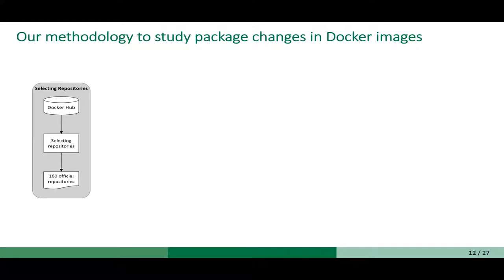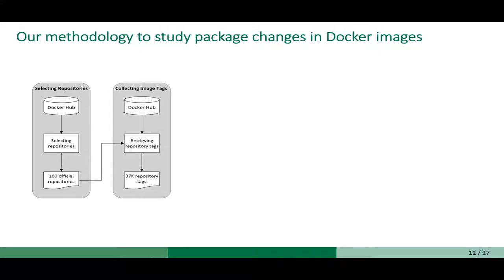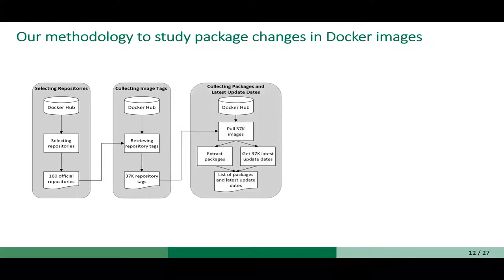There are 160 official repositories on Docker Hub. For each of those repositories, we extracted and retrieved the repository tags, and in total there were 37,000 repository tags. After that, for each of those tags, we pulled the image and extracted the packages inside that image, and also got the latest update date.